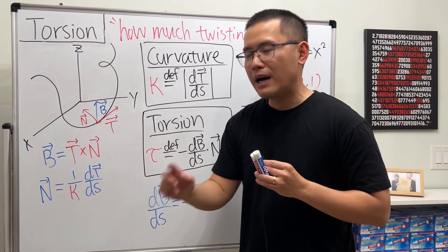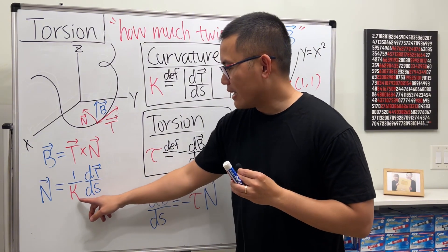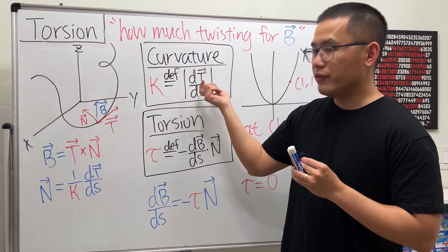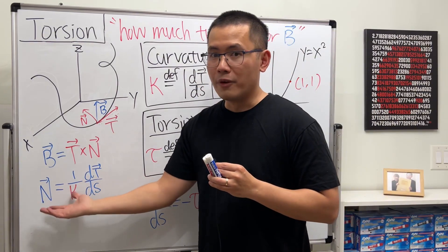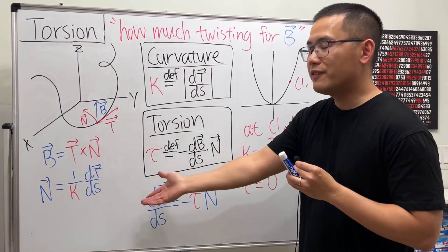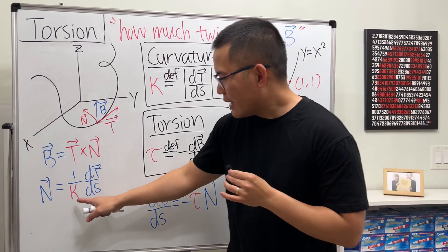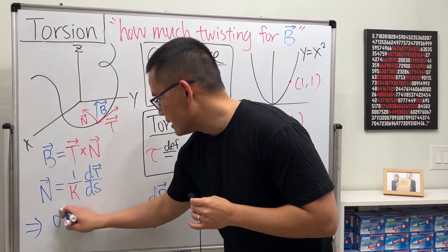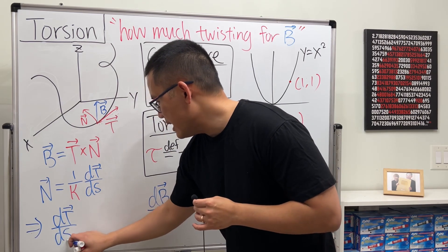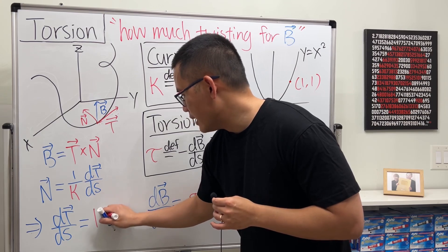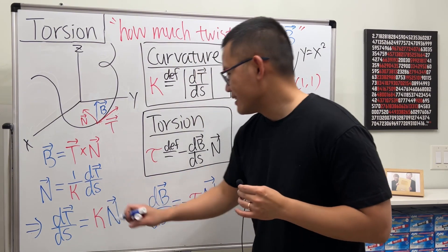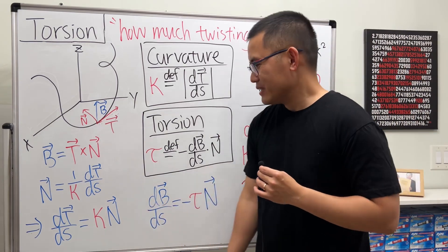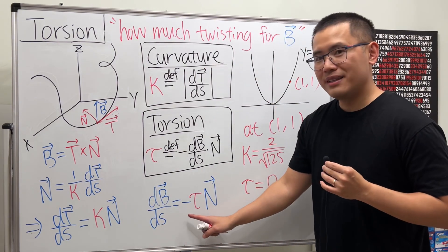But we want it to be unit, right? So we divided by its magnitude, and that's exactly what κ is—the magnitude of this thing. So we can ensure that N is the unit normal vector, the length is equal to one. And now if I just multiply the κ on both sides, then we can see that dT/ds is equal to κ times the unit normal vector. So I think they are quite similar. So we went over this already. Now let me show you why this is true.